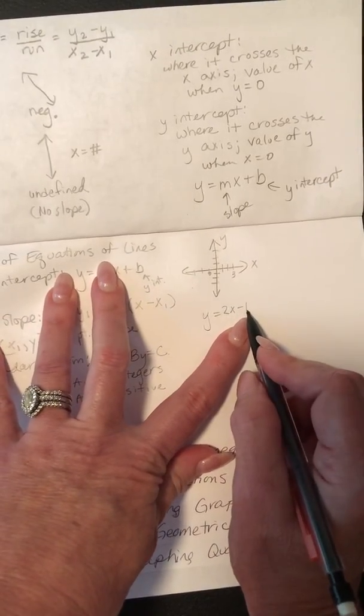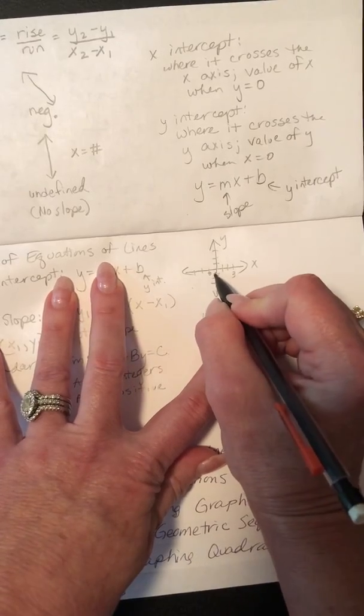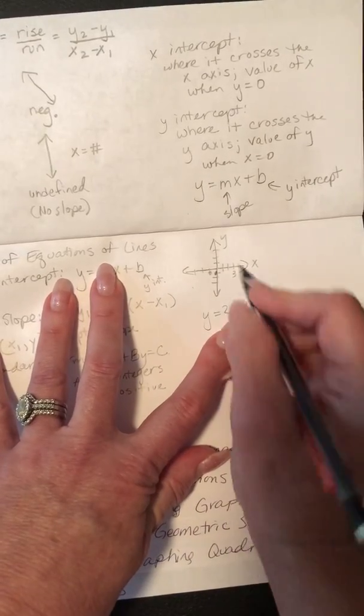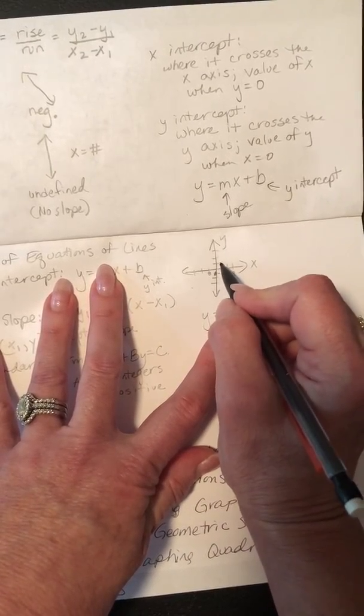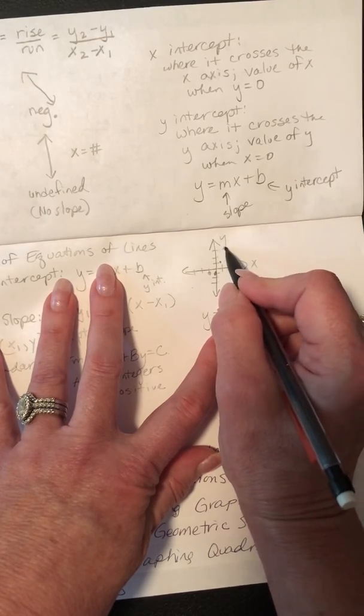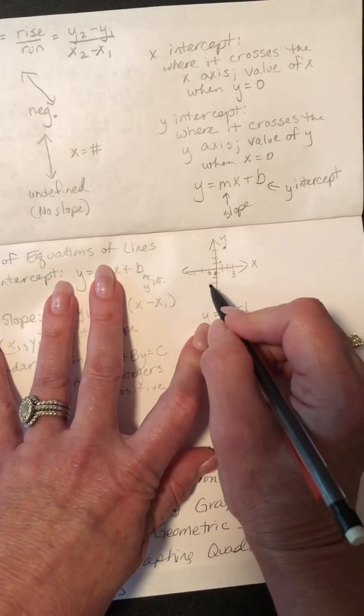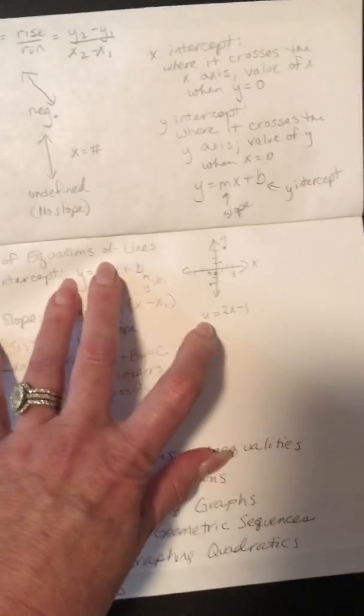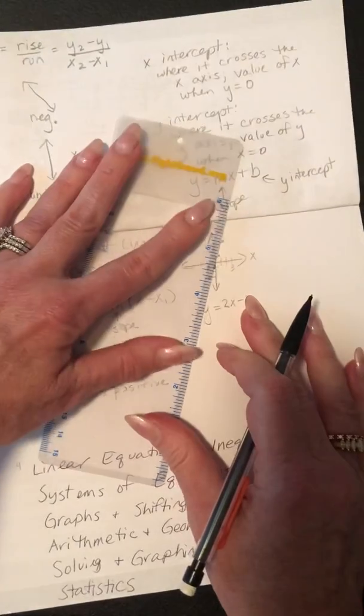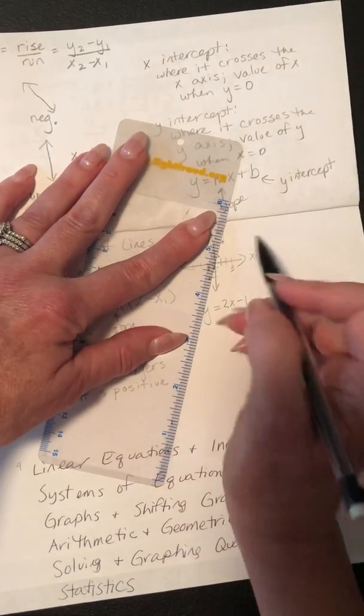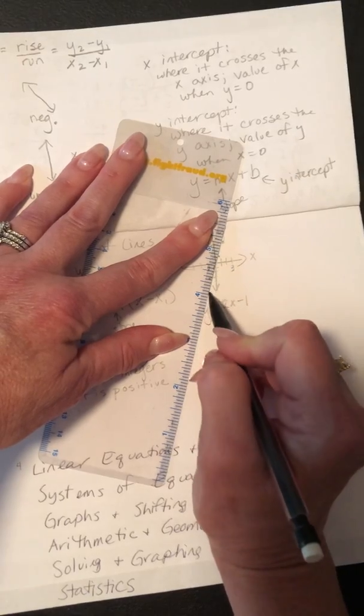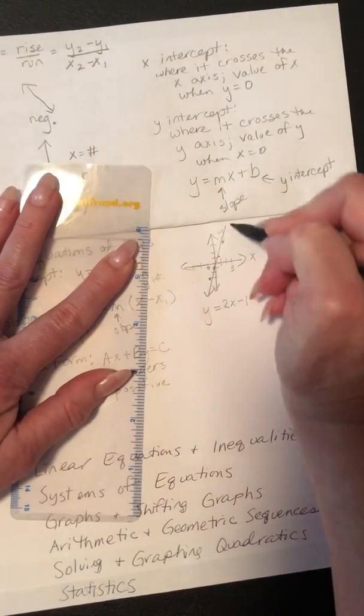And this says y equals 2x minus 1. So, the y-intercept is negative 1. So, you graph that first. And then the slope is 2. So, go up 2, right 1, put a dot. Up 2, right 1, put a dot. Or, down 2, left 1, put a dot. And then take a straight edge. I guess I should have used the straight edge when I was drawing my x and y graph, too. And you extend, and you put arrows.